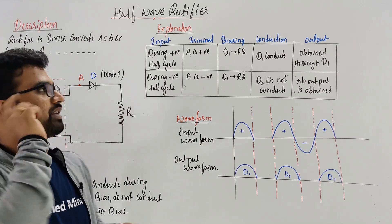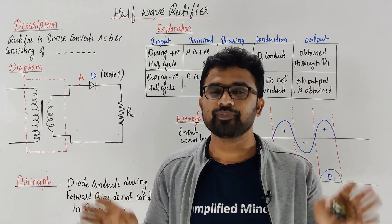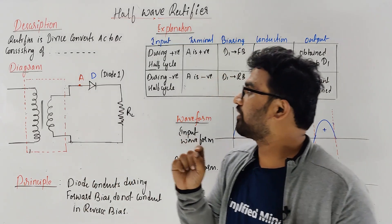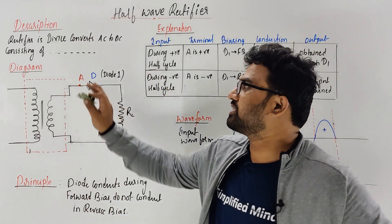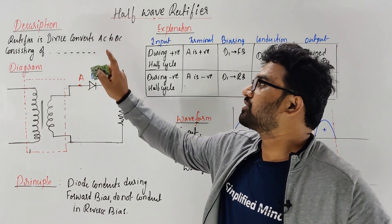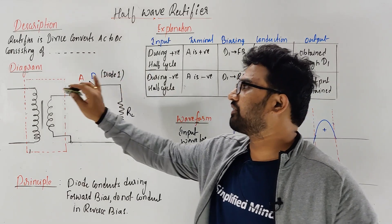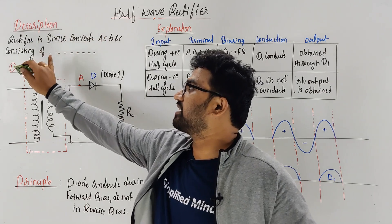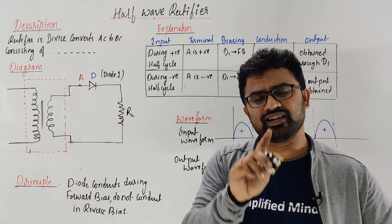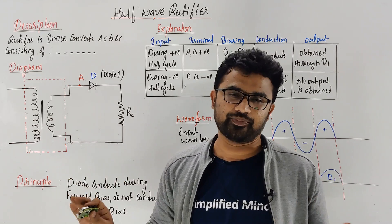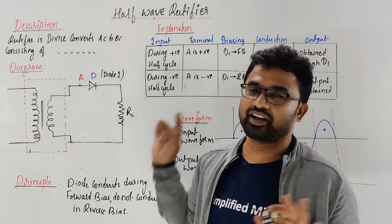Coming to this derivation — if you understood the derivation of the full wave rectifier, the half wave is very very easy. So next is the half wave rectifier. The description is essentially the same as the full wave rectifier, but the only difference is there will be only one diode. A half wave rectifier is a device which converts AC to DC. It consists of only one diode and a transformer — no center-tap transformer, just a plain transformer. I already explained in the previous video why we use a transformer.